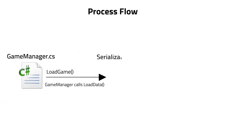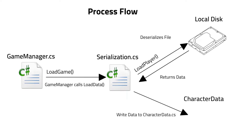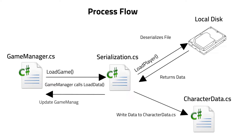Then when we want to read that information we're just going to be doing the same process in reverse. We're going to start with the file, read that file into our game, de-serialize that information and put it back into the class which held all the information for our game, and then our game is just going to read that and get updated by the data that we loaded. Hopefully that all just made sense but if not don't worry, we're going to go through it step by step right now.